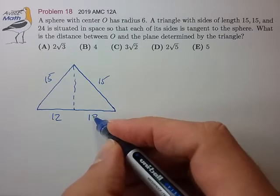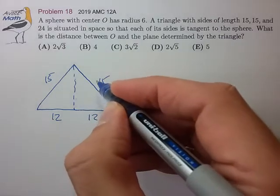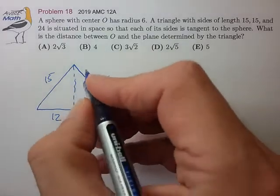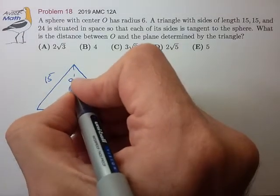12, 12 looks to be a 3-4-5 right triangle, which would make the height 9.